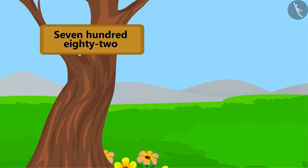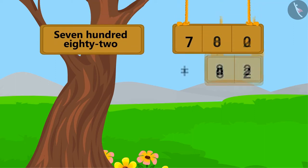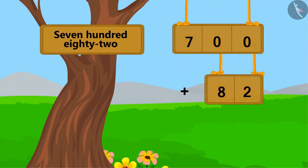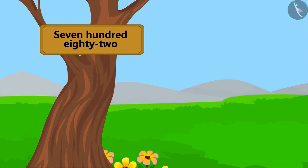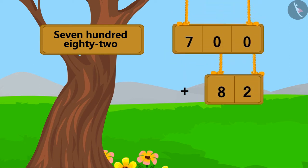782 is 82 ahead of 700, therefore we can write it like this by adding 82 to 700. We can also write 82 by adding 2 to 80 like this. Oh wow children, you are very intelligent, this is absolutely right.